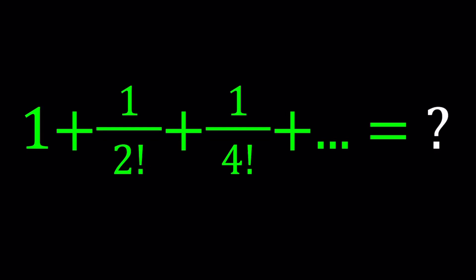Hi everyone. In this video, we're going to be evaluating an interesting infinite sum with factorials — actually, it's the reciprocals of factorials. We have 1 plus 1 over 2 factorial plus 1 over 4 factorial plus 1 over 6 factorial, and so on to infinity, so that every denominator is an even number factorial. The first term is written as 1, but it means 1 over 0 factorial. As you should probably know, 0 factorial equals 1. We're going to be presenting two methods.